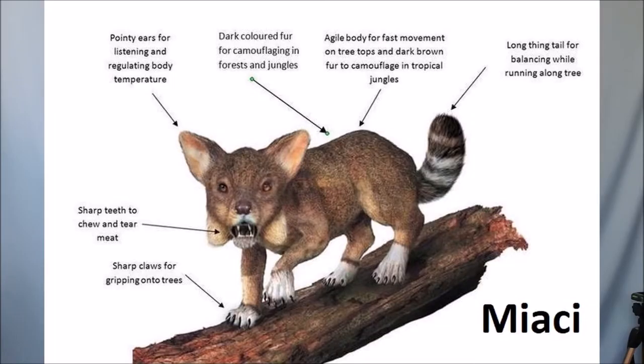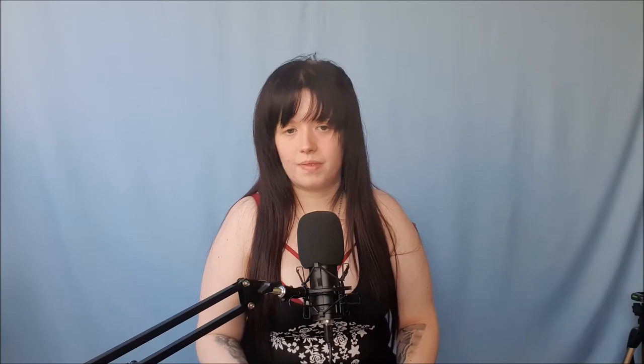The Miacis — I'm not sure I'm pronouncing this properly — is known as one of the first ancestors of the coyote and all carnivores, including hyenas, canines, felines, bears, and raccoons. Canines are dogs, felines are cats, and you know what bears and raccoons look like. It's believed they first appeared around 60 to 55 million years ago, long before any of us were born. This common ancestor lived in North America and Europe, just like coyotes today.